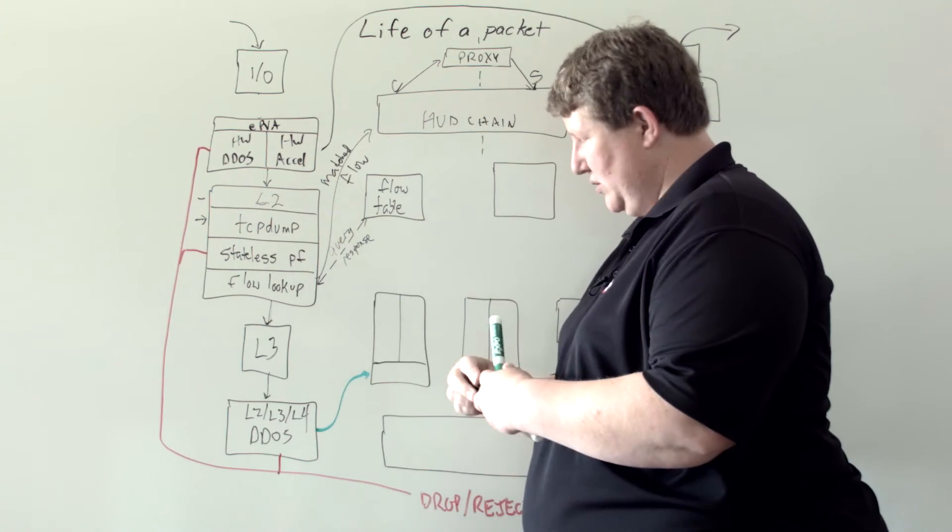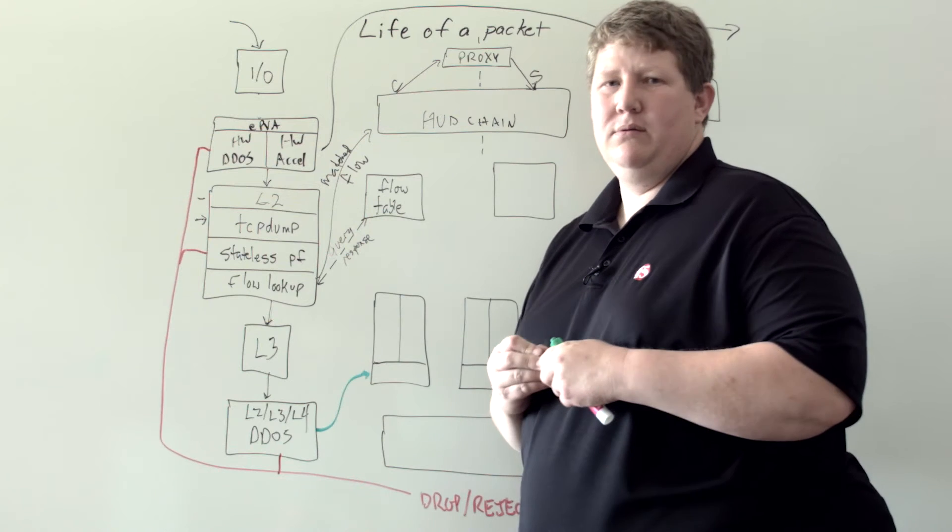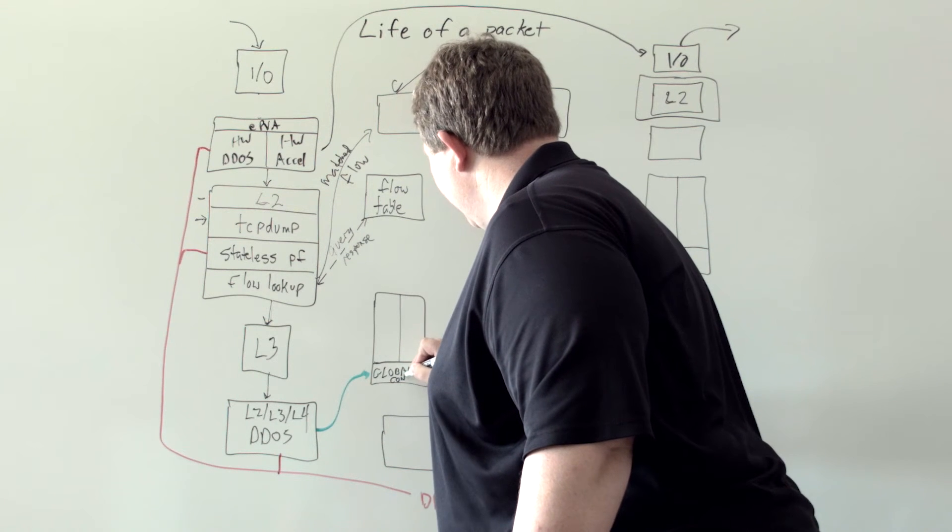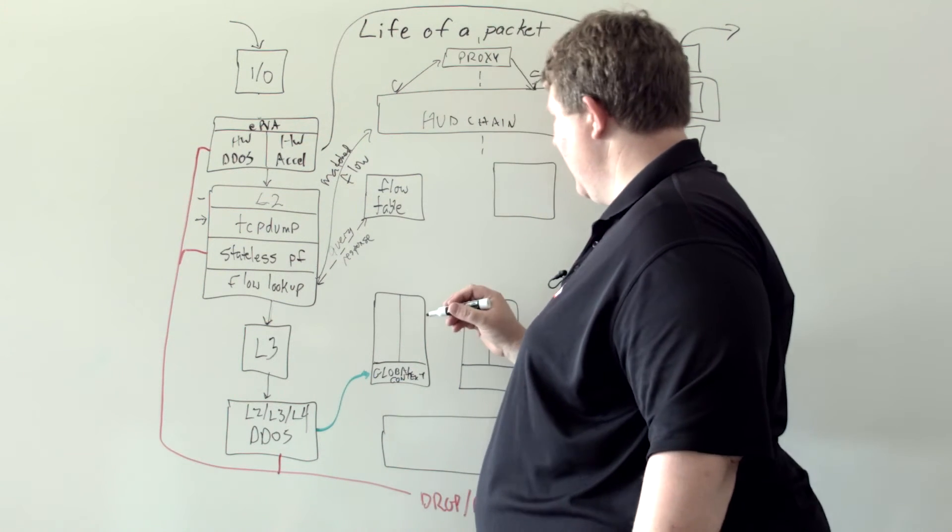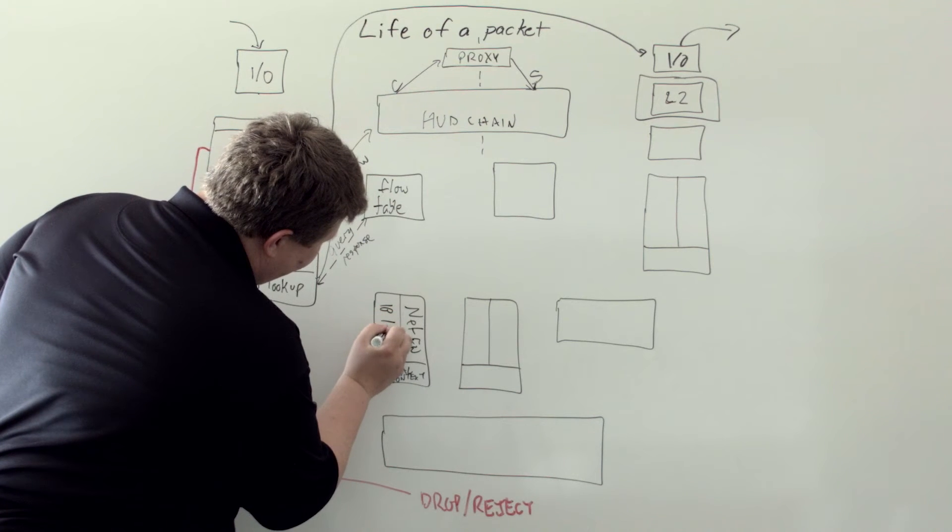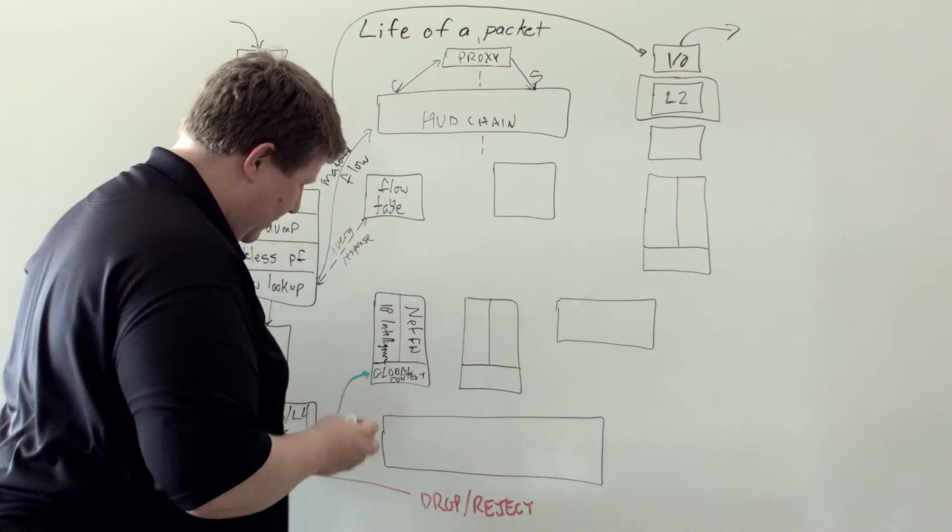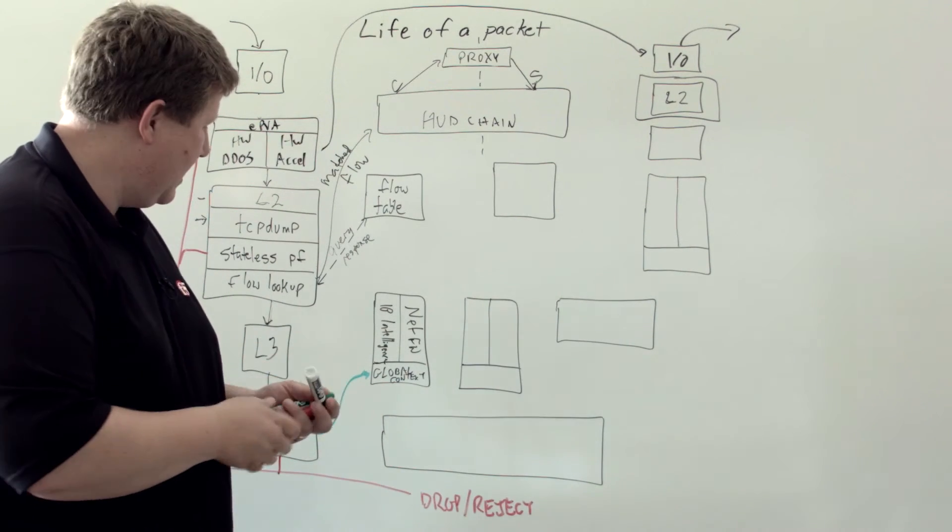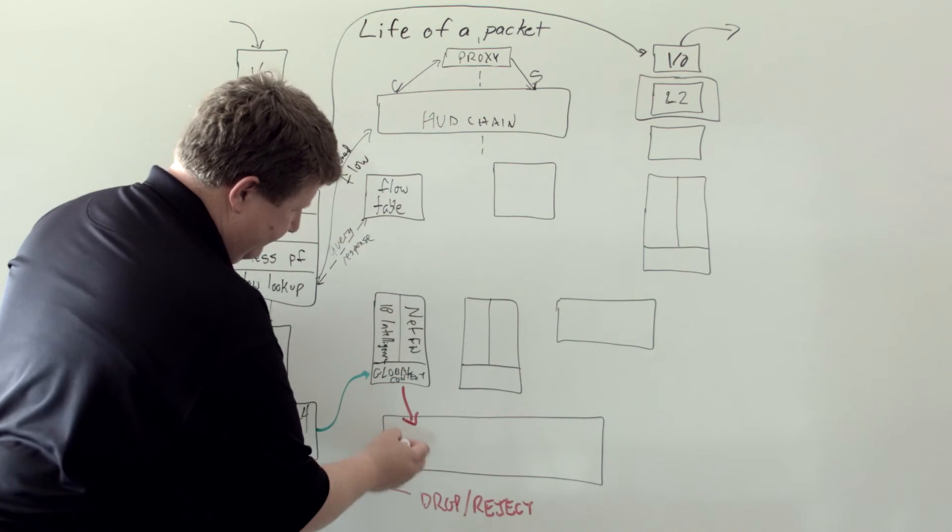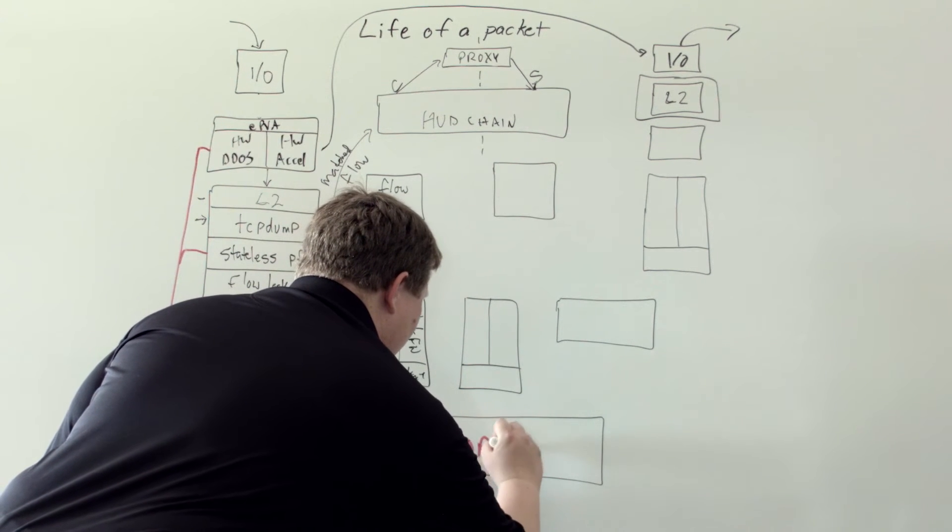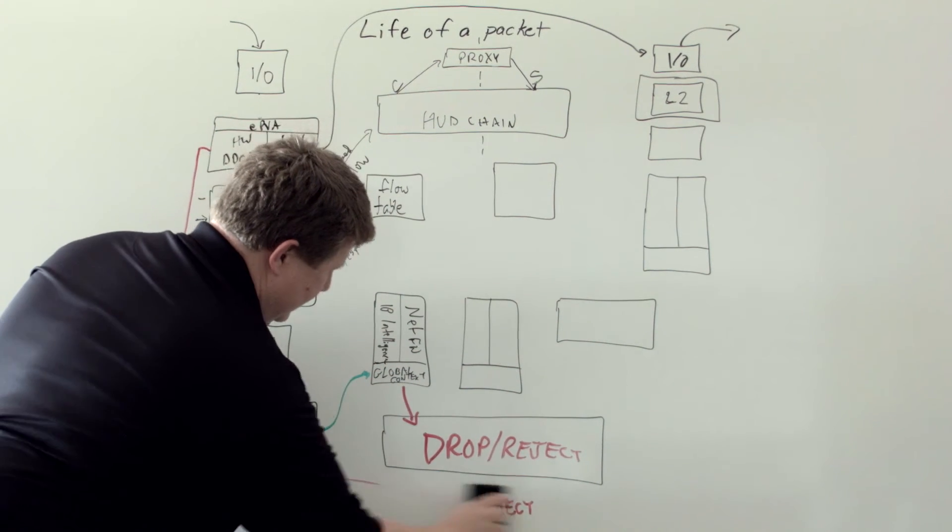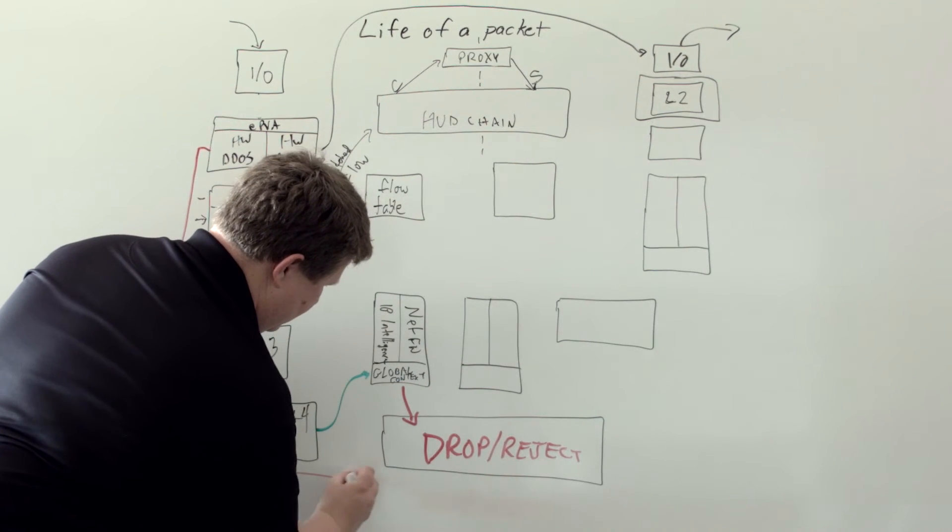In the global context, this is where the firewall, our firewall product is. So global context rules. If you have any global context rules configured, we have the net firewall and then we also have IP intelligence. Those are being looked at from a global perspective. If they don't match, then boom, we're coming down here to drop/reject. All of that's coming here.